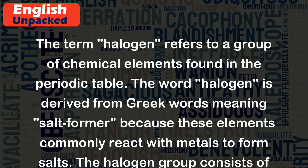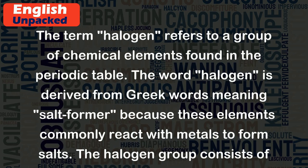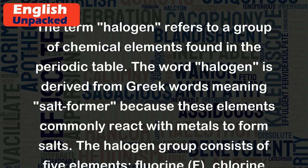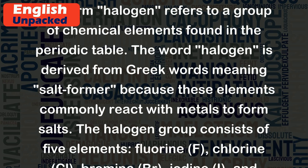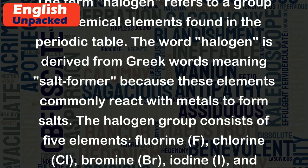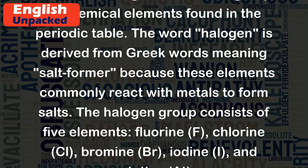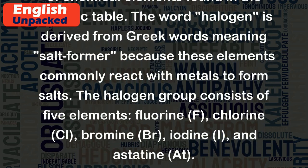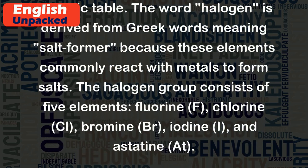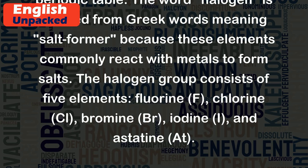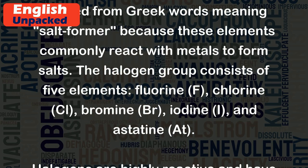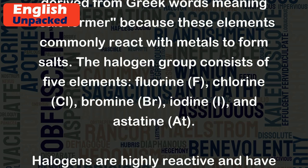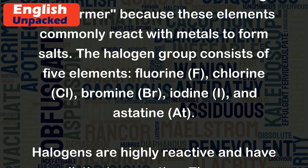Because these elements commonly react with metals to form salts. The halogen group consists of five elements: fluorine (F) and chlorine (Cl),